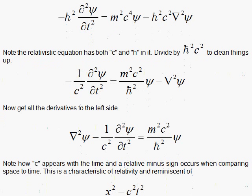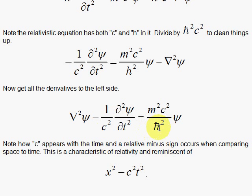You see c's and h-bars. C's come from special relativity, and h-bars come from quantum mechanics, non-relativistic quantum mechanics. So by making a marriage of quantum mechanics with relativity, you see c's and h-bars in the resulting differential equation.